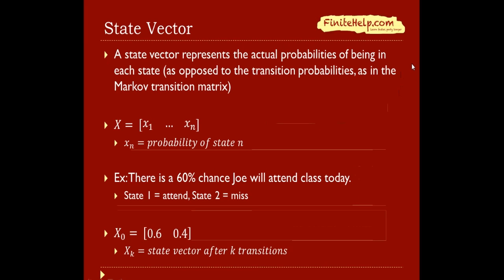The state vector represents the actual probabilities of being in each state, as opposed to the transition probabilities in the Markov transition matrix. We have this big X, and these in between is the probability of being in state n. The state vector is a one-row, n-column matrix.